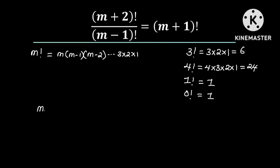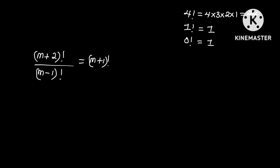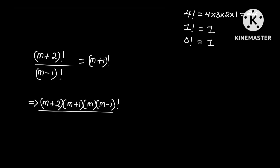We are given that (M+2)! divided by (M-1)! is equal to (M+1)!. From the definition above, we can expand the numerator as (M+2) × (M+1) × M × (M-1)! divided by (M-1)!. The right-hand side expands as (M+1) × M × (M-1)!.